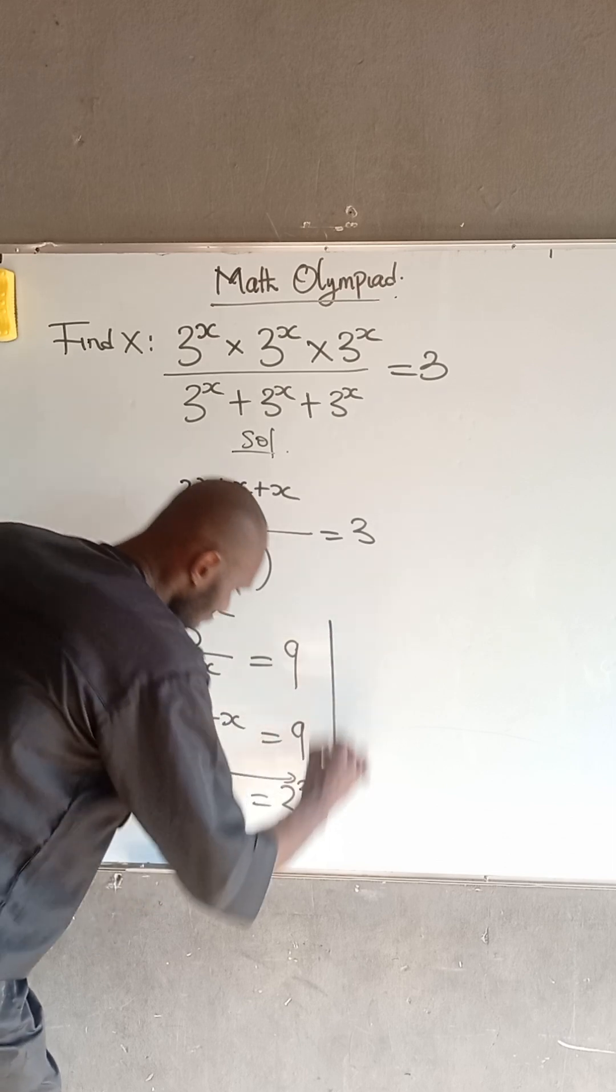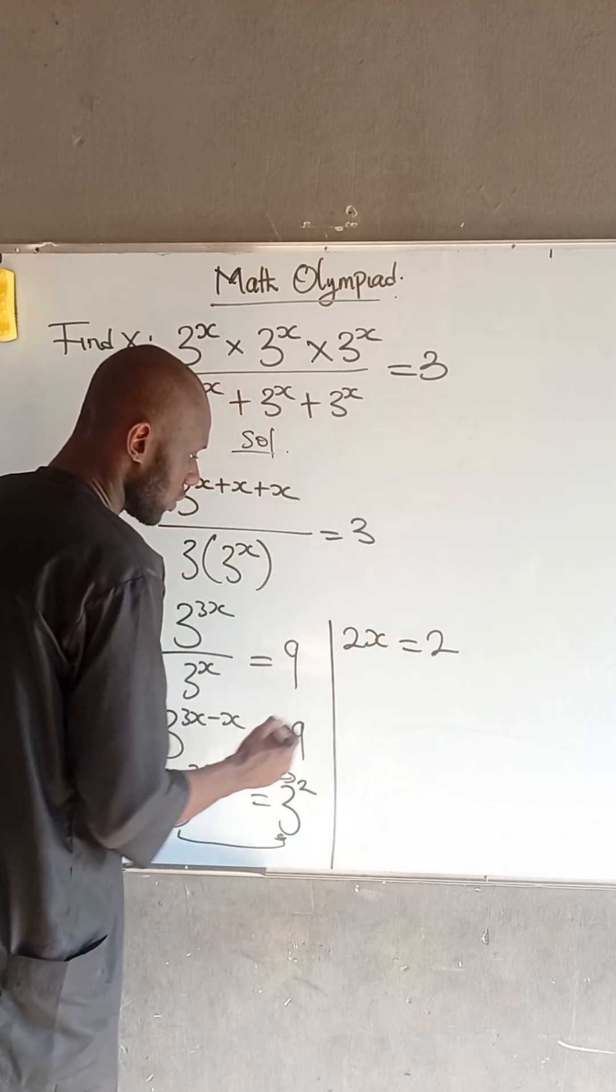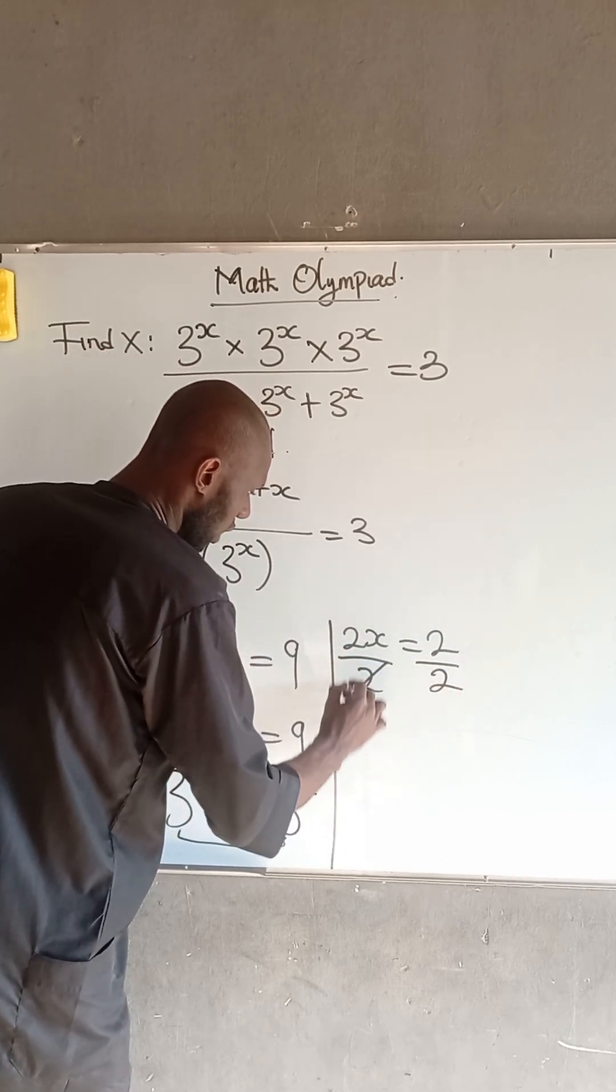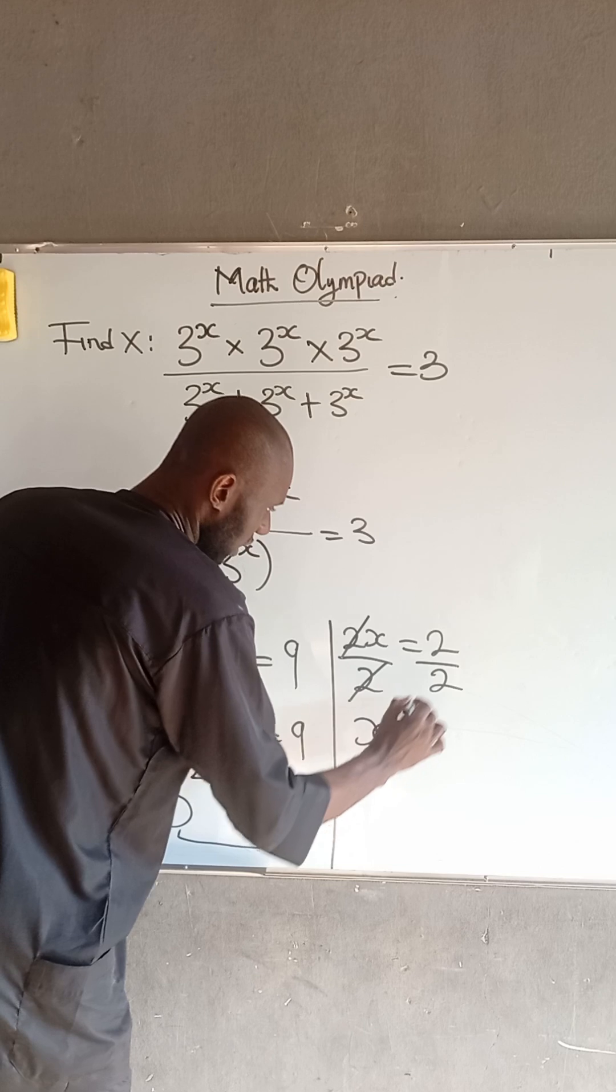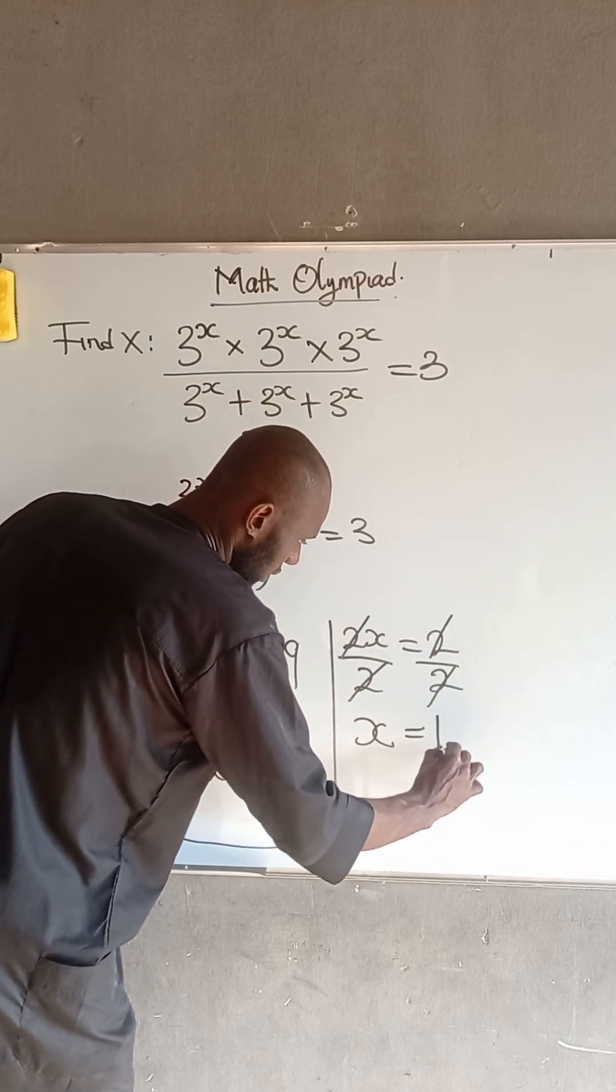We have that 2x is equal to 2. To find the value of x, we divide both sides by 2. 2 divided by 2 is 1, so therefore x is equal to 1.